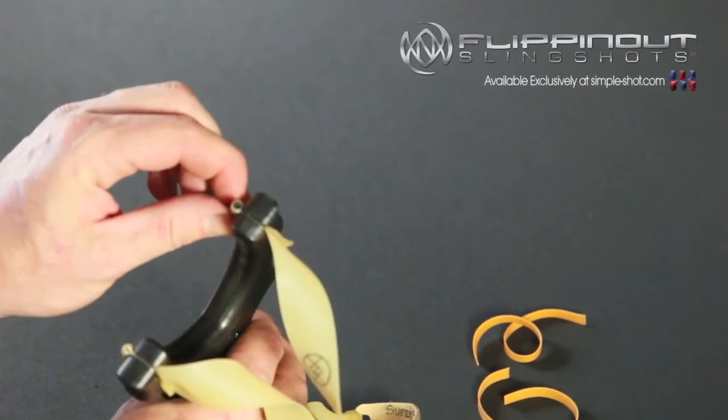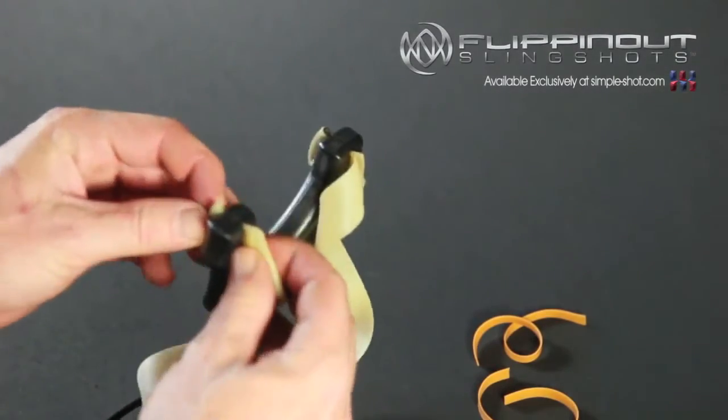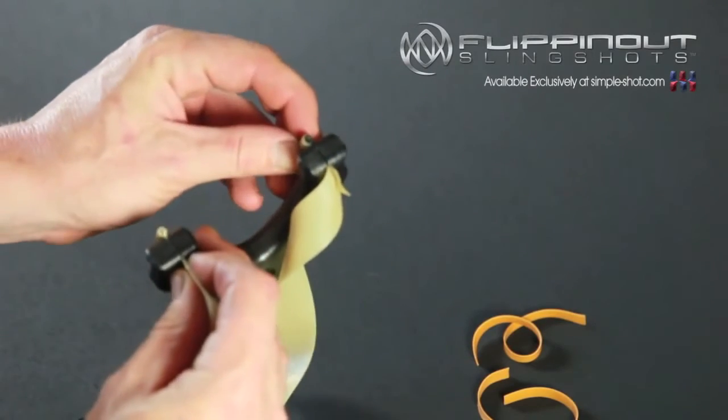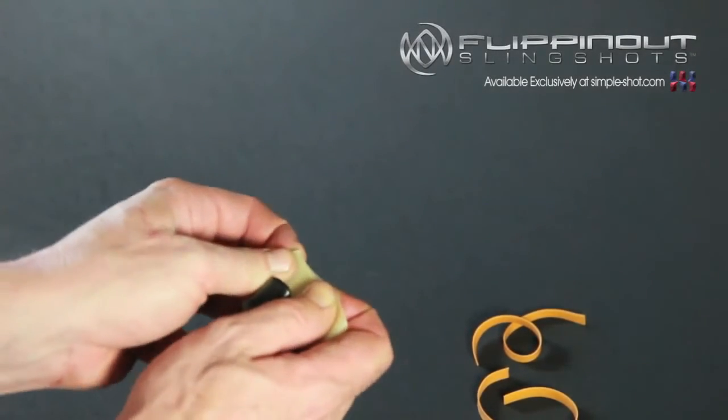But a match, a toothpick, a twig—anything would work. It's pretty simple: wrap the band around your matchstick or tube, stretch them and slide them into the slot, just like I'm sliding it out here.